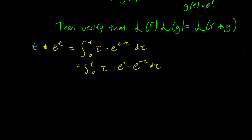So t is a constant with respect to tau, which we are integrating in. So we can just pull that out. We have e^t times the integral from 0 to t of tau times e^(minus tau) d tau.